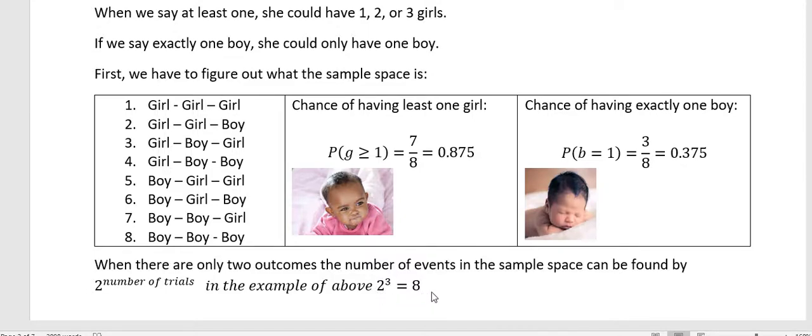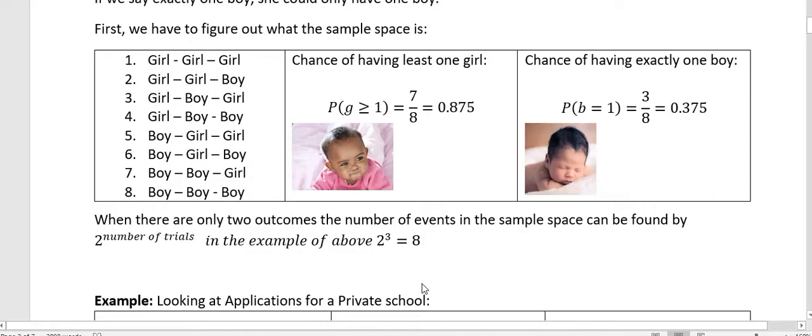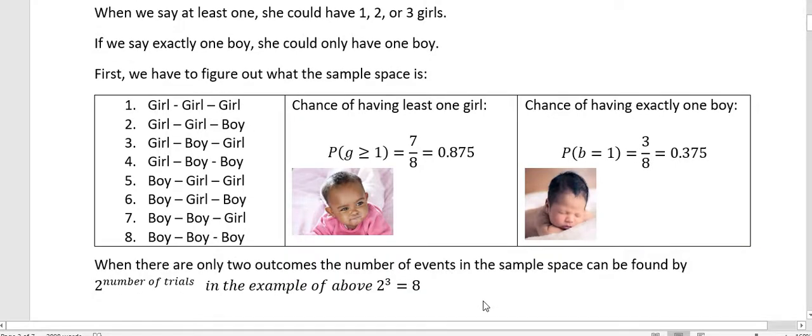So in the example above, we had two outcomes and we had three children. So two to the third power means that we had eight outcomes. If you had four children, you'd have two to the fourth or 16 different outcomes. And that number, of course, gets bigger and bigger as you have more and more children. So knowing that is a nice little way to know the size of your sample space. But if you're going to ask this kind of question, you need to know more than just knowing the number. You have to be able to look at how that breakdown looks.